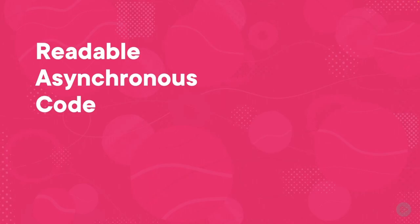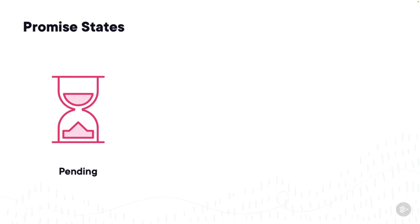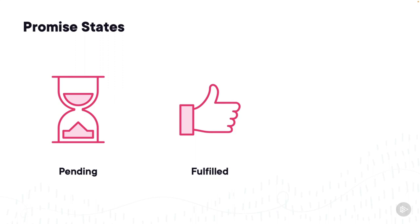A promise object can have three states. The first is pending — this is the initial state. When you first create a promise it's in the pending state. While an API call is happening, the promise is pending. If we remember that order statuses call that took 1.5 seconds to respond, a promise would be in the pending state for the entire 1.5 seconds. The next state is fulfilled — a promise moves from pending to fulfilled when the asynchronous call has completed successfully, returning a single value such as a specific order from an API.